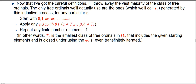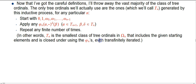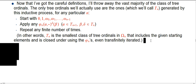We'll see a bunch of examples of what those look like in practice. So it's the smallest class of tree ordinals in omega_n that includes these given starting elements and is closed under transfinitely iterated applications of phi_n. We'll see how that works.